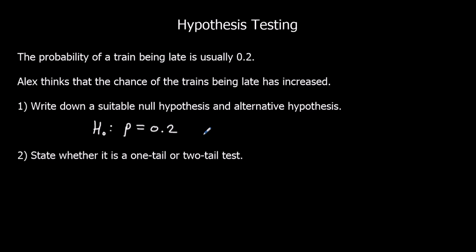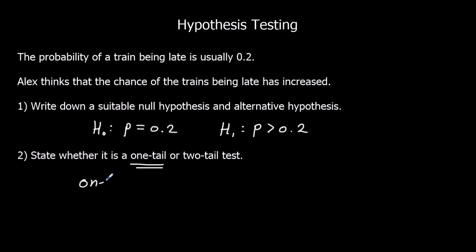The alternative hypothesis is what will be true if we reject the null hypothesis. Alex thinks the chance of the trains being late has increased, so that would mean that the probability is now bigger than 0.2. Now, where the alternative hypothesis is either just bigger than or just less than, it's a one-tail test. We're only looking at whether it's increased — only the extreme values that are bigger — so it's a one-tail test.